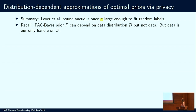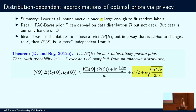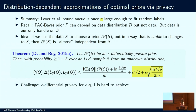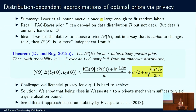Recall the PAC-Bayes prior P can depend on the data distribution but not the data itself, while data is our only handle on the data distribution. The idea we proposed last year is to use some of the training data itself to choose a prior distribution P, but in a way that is stable to changes in the training data — so the prior is almost independent of the training data. The particular technique we use is differential privacy. If you learn the prior in a differentially private way, you still get a valid PAC-Bayes bound, but with an additional penalty term depending on the differential privacy parameter epsilon. The less differential privacy you have, the more penalty you incur. We also show it is enough to be only close in Wasserstein distance to a private mechanism to still get these guarantees.